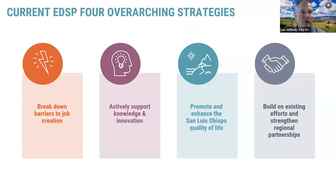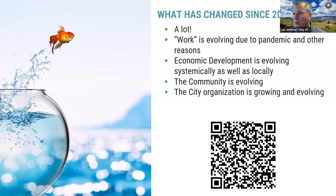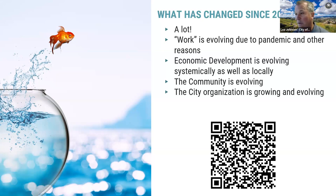The current EDSP has four overarching strategies: breaking down barriers to job creation, actively supporting knowledge and innovation, promoting and enhancing SLO's visible quality of life, and building on existing efforts and strengthening regional partnerships. Since 2015, a lot has changed — work is evolving due to the pandemic, economic development is evolving systemically as well as locally, and the city organization is growing. Things like DEI and sustainability were not really a focus of economic development in 2015 but that has changed nationally and locally. The QR code on screen takes you to a website with all the information on the EDSP, including the current draft and a link to Open City Hall where you can submit comments.